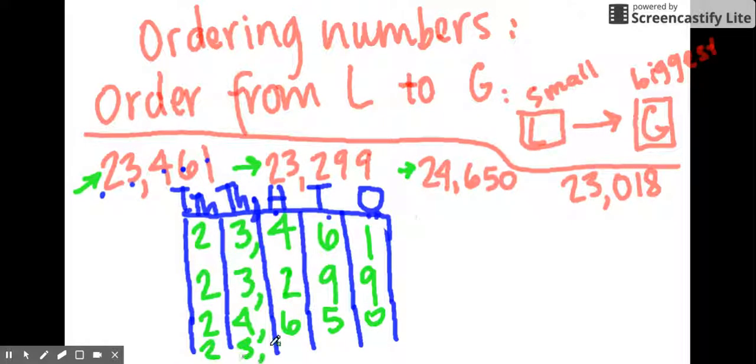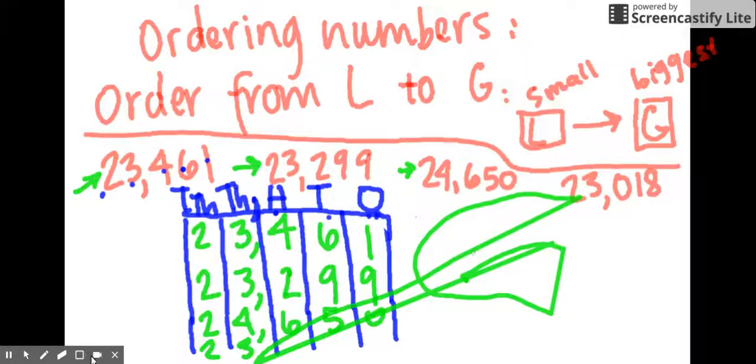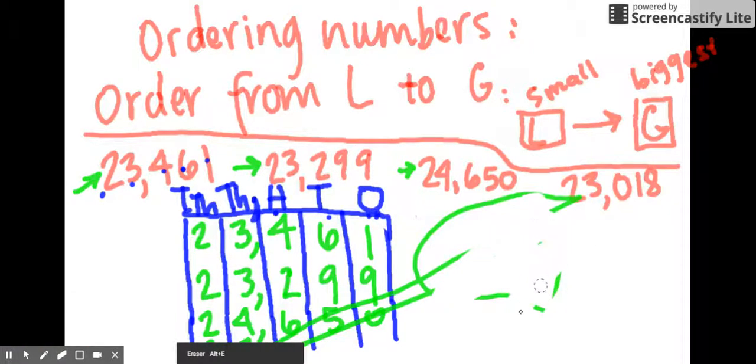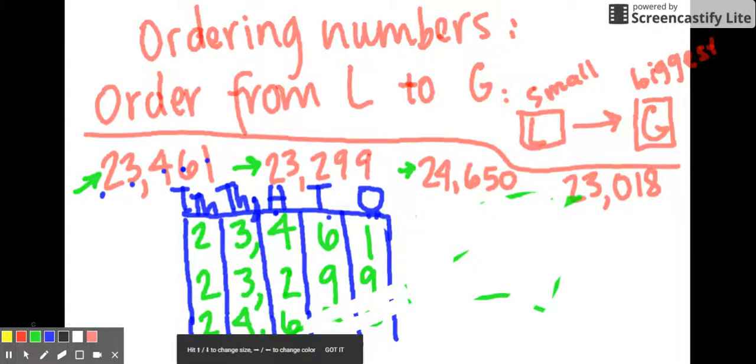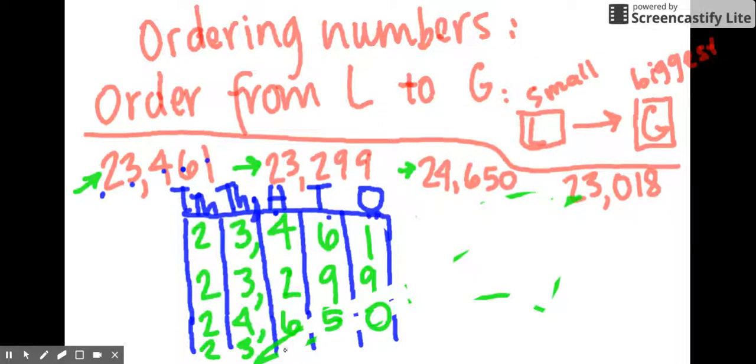Last number, 23,000. Oh, my goodness. Well, what happened there? Technology. If you stayed with me through that whole thing, you are a saint. Let's fix what happened. So we lost 650. The last number was 23,018. I know it looks a little messy right here. Very, very sorry about that.